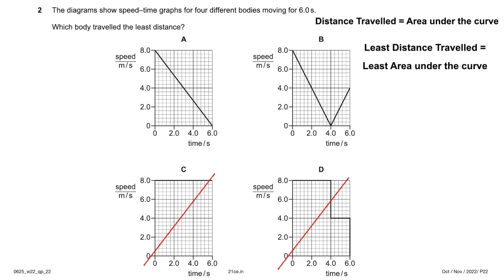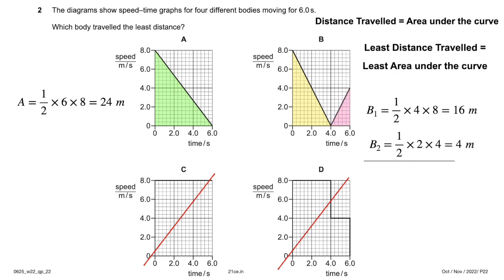A and B are tricky because they look similar, so we calculate the area. For A, it's a triangle: half × base × height = half × 6 × 8 = 24 meters. For B, big triangle: half × 4 × 8 = 16, plus small triangle: half × 2 × 4 = 4, total 20 meters. So B has the least distance — B is the answer.